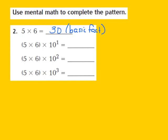In the next step, they give me 5 times 6, and this time it's times the first power of 10. I'm going to write down the product of 5 times 6, which was 30. My exponent here is a 1, so that means I'm going to add 1 zero to my basic fact, and I now have 300.